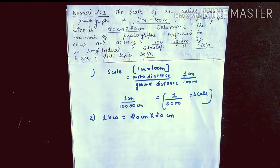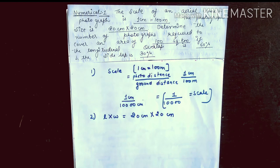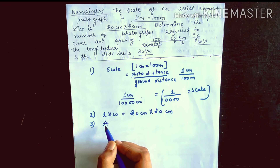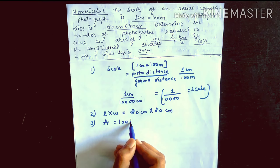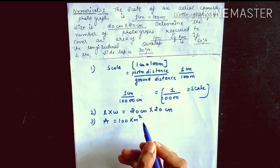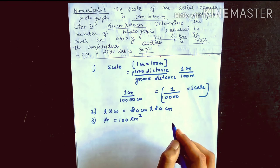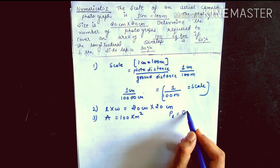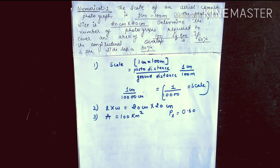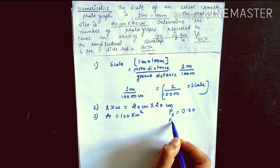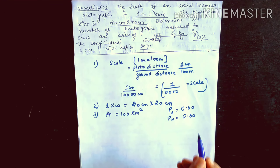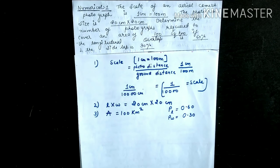We need to determine the number of photographs required to cover an area of 100 square km. The total area given is 100 sq km. The longitudinal overlap PL is 60% (0.60) and the side overlap PW is 30% (0.30). All these details are given and we have to calculate the total number of photographs.